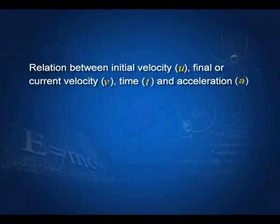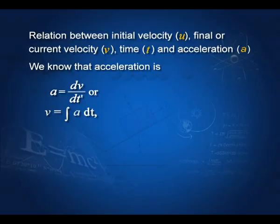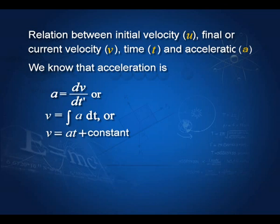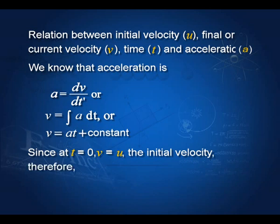The relation between the initial velocity u and the final velocity v, time t, and acceleration a can be found as follows. We know that a is equal to dv/dt. So we integrate this and get v equal to the integral of a dt, or v equal to at plus a constant. The constant is determined by initial conditions: at t equal to 0, velocity equals u. Therefore, we get the equation v equal to u plus at.